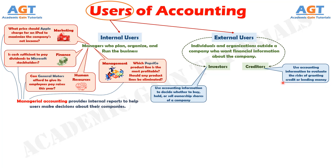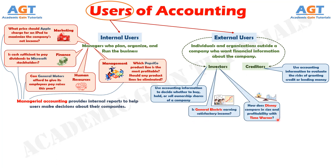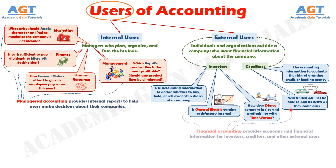Some questions that investors and creditors may ask include: Is General Electric earning satisfactory income? How does Disney compare in size and profitability with Time Warner? Will United Airlines be able to pay its debts as they come due? Financial accounting answers these questions. It provides economic and financial information for investors, creditors, and other external users.